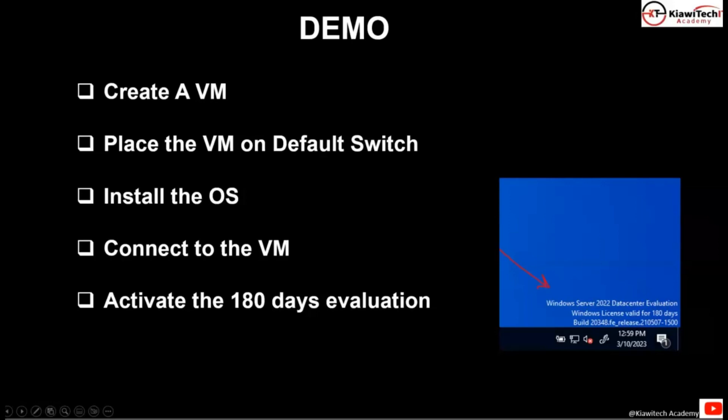We're going to install the operating system, connect to the virtual machine, and make sure that the 180-day activation is turned on. If you have a license key that is fine, but if you don't have a license key you can go online and download the 180-day evaluation edition and use it for this lab. I'll also show you in one of my videos how to extend these 180 days in case you're running out of time.